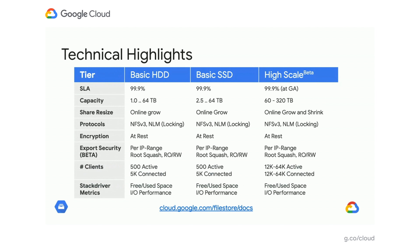With FileStore Basic, you can grow up to 64TB. In High Scale, that extends up to 320TB. You don't have to start with a large filer, because for all variants of FileStore you can actually grow online with no downtime on demand. For protocol support, we've got you covered with NFS, which is the Linux industry-leading protocol. We also include file locking, and this is true across all tiers. Generally, NFS can sometimes work for Microsoft Windows workloads, but most of the time we would recommend a partner offering if you have a Windows workload.